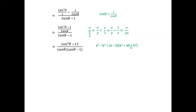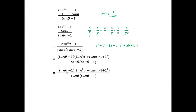Using the identity, the numerator factors as (tan θ minus 1)(tan squared θ plus tan θ into 1 plus 1 squared), which is (tan θ minus 1)(tan squared θ plus tan θ plus 1). Placing this over tan θ into (tan θ minus 1), the (tan θ minus 1) brackets cancel, leaving (tan squared θ plus tan θ plus 1) upon tan θ.